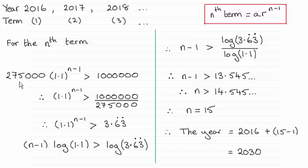So dividing both sides by 275,000 gives us this result, which turns out to be 3.636363 and so on. I've written that as 3.63 recurring as you can see.